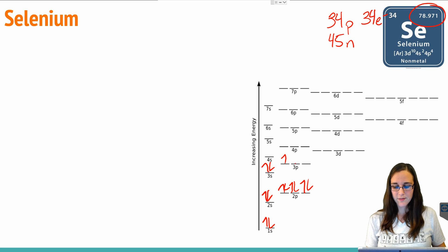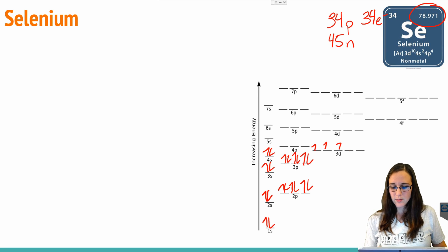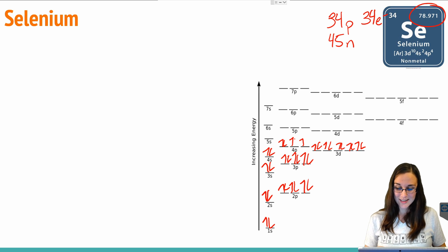The example we're going to run through today is for selenium. Selenium has atomic number 34, which means that it has 34 protons, and if we wanted to determine the number of neutrons, we would need to subtract the mass 79 minus 34, which gives us 45 neutrons. So 34 protons, 45 neutrons, and 34 electrons. This is the perfect example because 34 electrons is a heck of a lot more than 20.